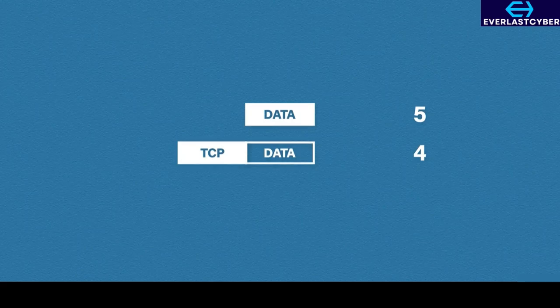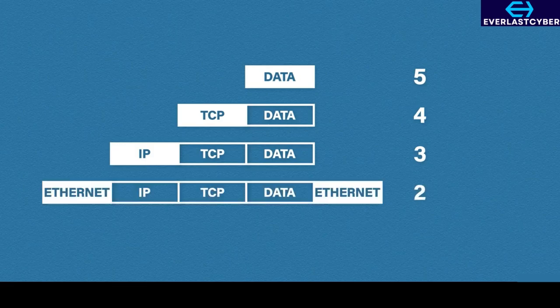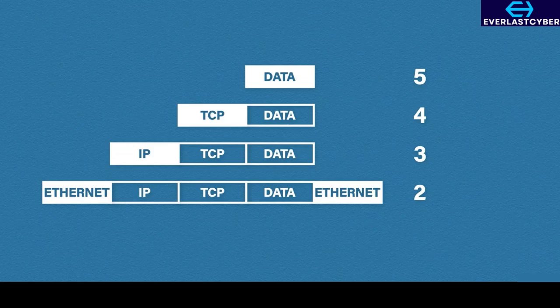Next, we move to the network layer, where we add the IP header. This will contain the source and destination IP address, as well as some other bits of information. Finally, we have the data link layer. Here we add not only a header, but a trailer as well. The header contains the destination and source MAC address, while the trailer contains some error checking information that the receiving side can check to make sure the data has been received correctly. Once the data hits the physical layer, it is physically transmitted — so we've gone through the encapsulation process.